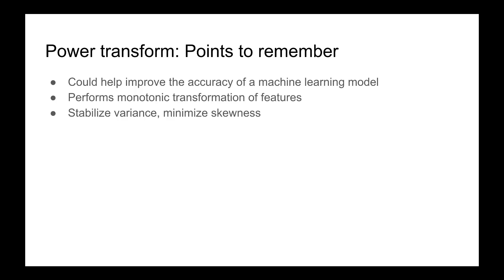So the final takeaway points from these slides is that, as we looked at in the Quantile Transform, again here power transform, if it's needed, bringing the data close to normal distribution could improve the accuracy of the machine learning model.